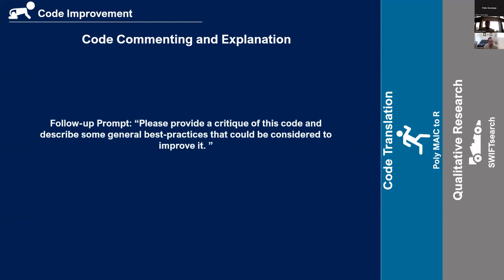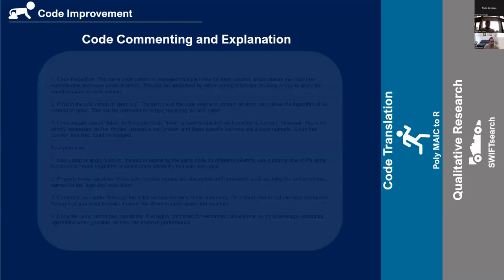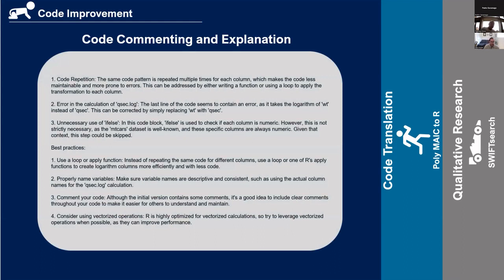In a follow-up I asked: can you provide a critique of the code and describe some of the general best practices that could be considered to improve it? This is like: can I use GPT to help me learn more about how to code in R, Python, Julia, or SAS? The first piece of feedback was code repetition — the same code pattern repeated multiple times makes it less maintainable and more prone to errors. It can be addressed by writing a function or a loop to apply the transformation to each column. It also identified the error in the qsec calculation.